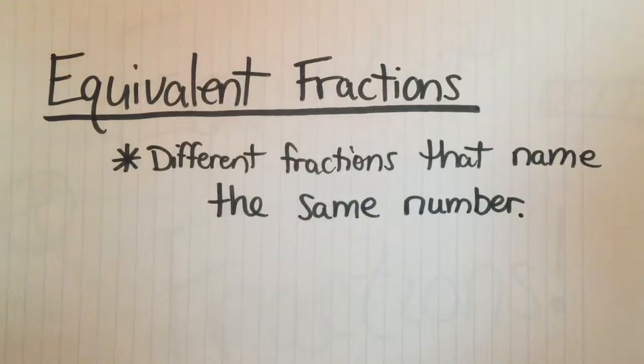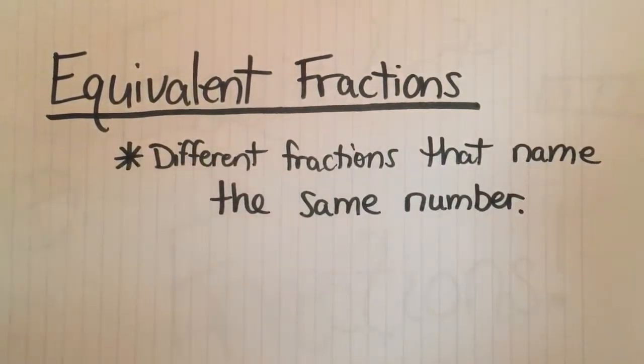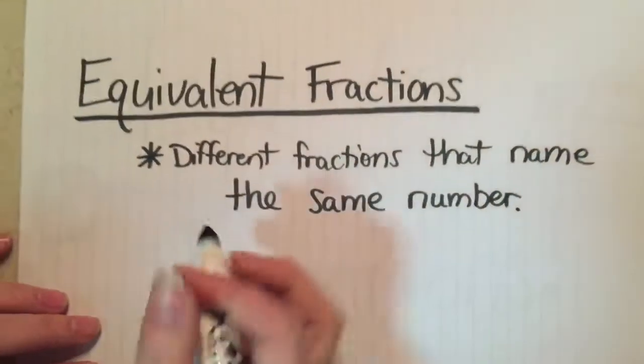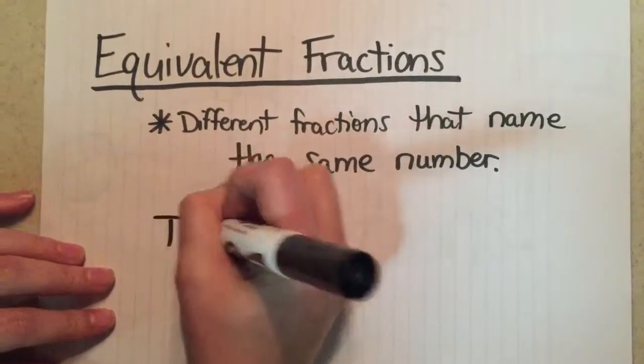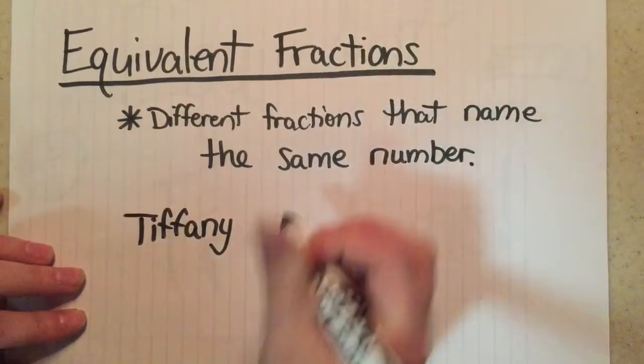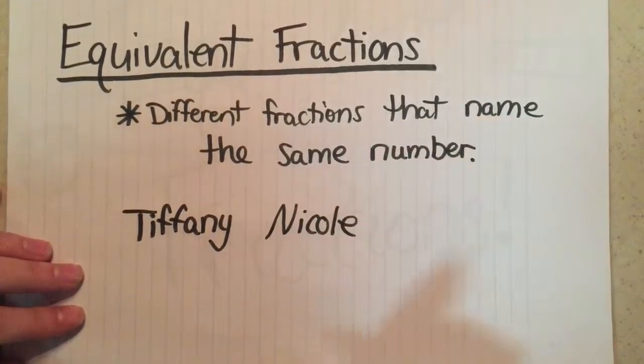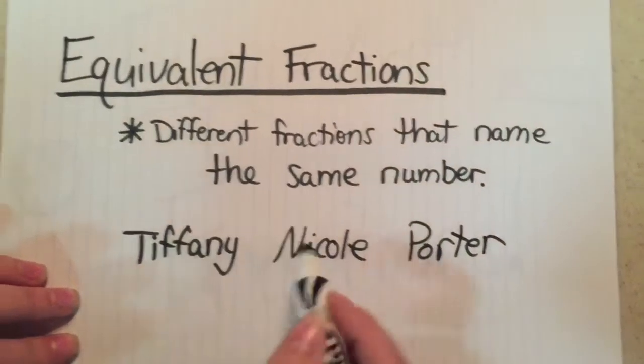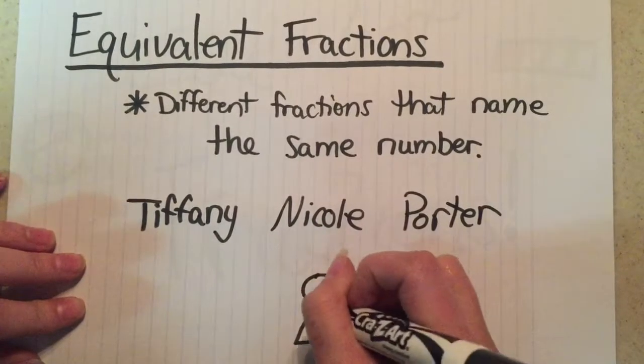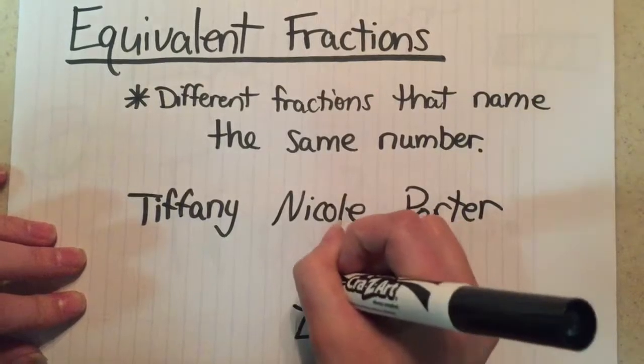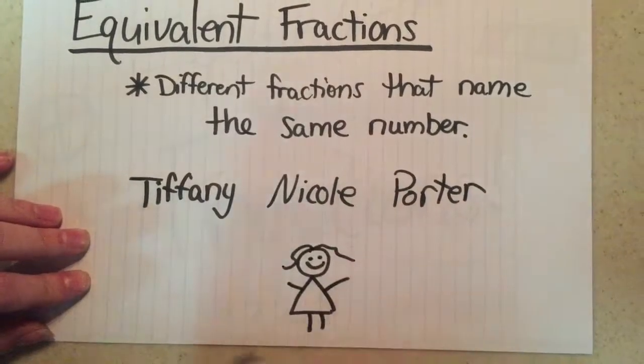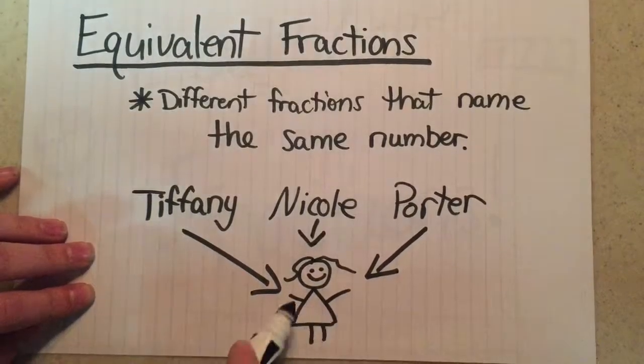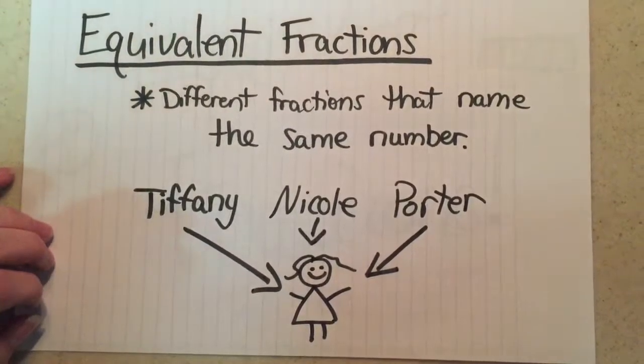So for example, I have three different names: a first name, a middle name, and a last name. My first name is Tiffany, my middle name is Nicole, and my last name is Porter. Three different names, but they all are my name. They all describe the same person, just like fractions can have different names but they name the same number.